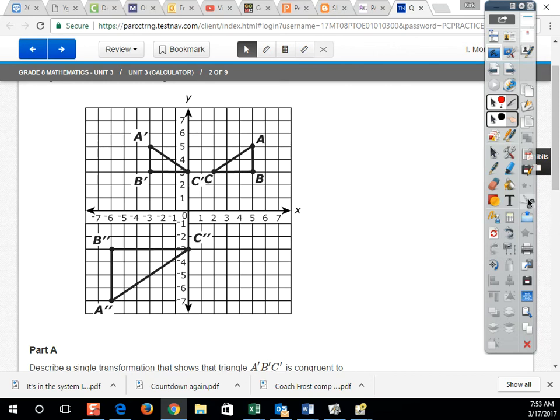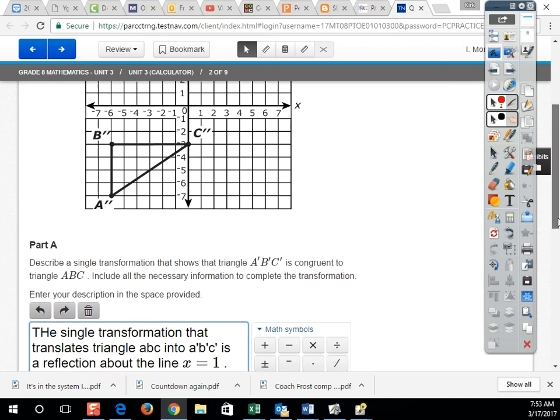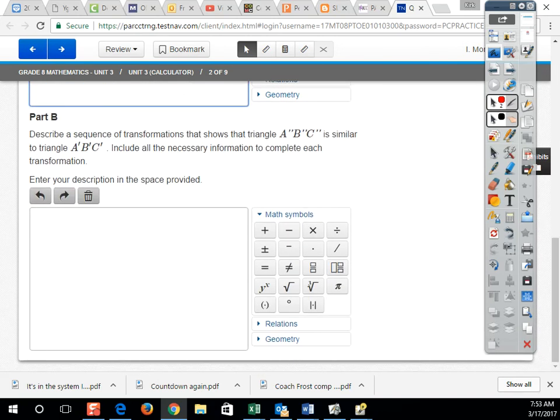And how much bigger was it? Well, the original shape is 3 and now the new shape is 2. We went from 2 to 4, so we have a scale of dilation of 2. So we have a reflection about the X axis and then a dilation centered at 0, negative 3 and the scale is 2.